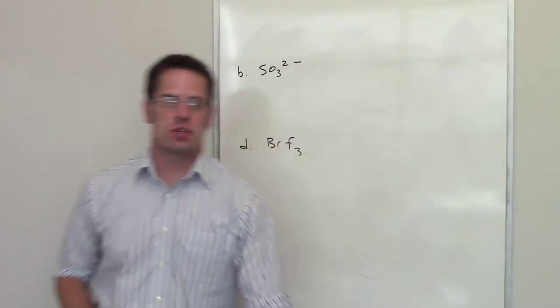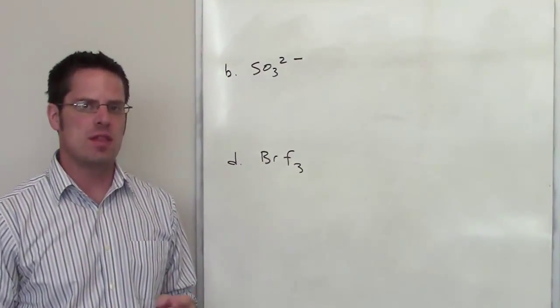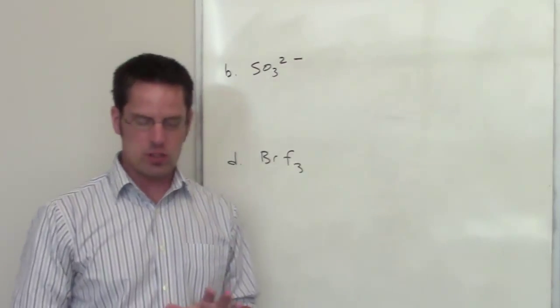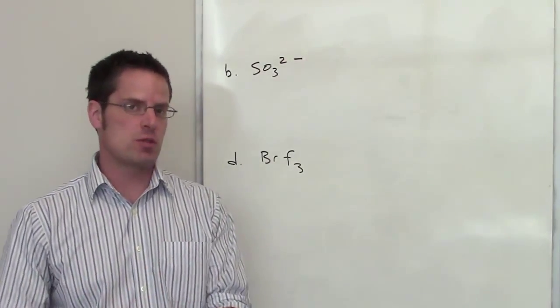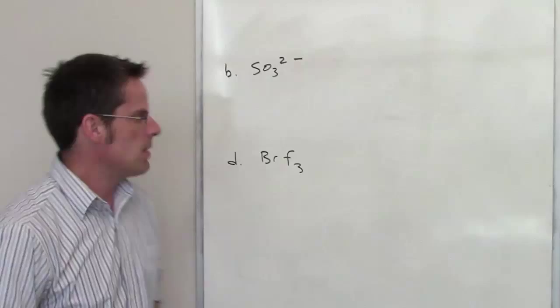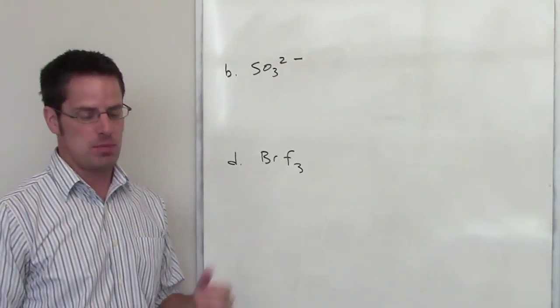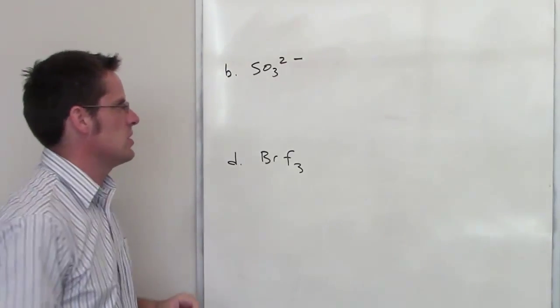This question asks us to draw the Lewis structures for a few different compounds and then determine what their electron domain and molecular geometries are. I'm not going to do it for all the examples I illustrated in the previous video, but I will do it for these two.